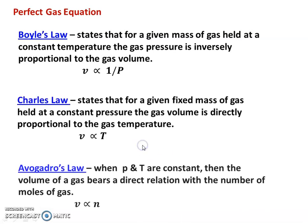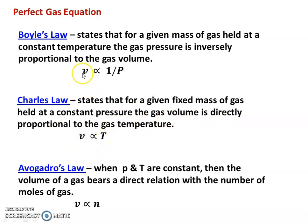Now we derive the perfect gas equation from three laws. Boyle's law states that for a given mass of gas held at constant temperature, the gas pressure is inversely proportional to the gas volume: specific volume v is proportional to 1 by P. Charles' law states that for a given mass of gas held at constant pressure, the gas volume is directly proportional to temperature: V is proportional to T. Avogadro's law states that when pressure and temperature are constant, the volume of the gas is directly proportional to the number of moles N: specific volume is directly proportional to N.